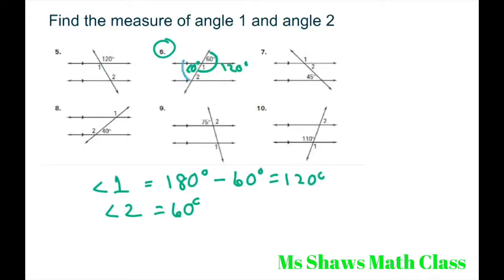These two angles are congruent, so that would be 60. Or you could use the consecutive interior angle theorem, since these are parallel lines, and angle 1 plus angle 2 should equal 180 degrees.